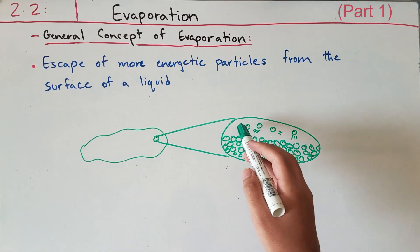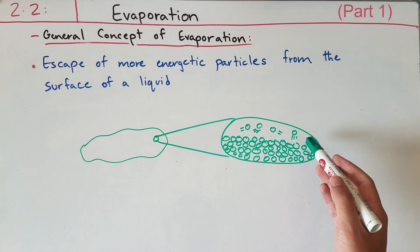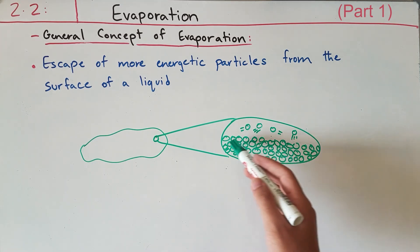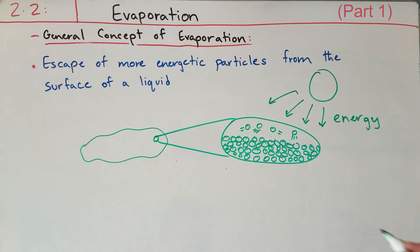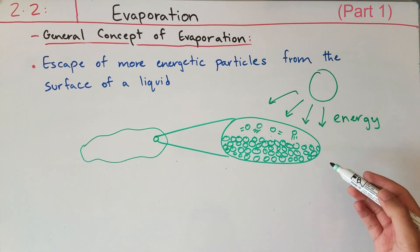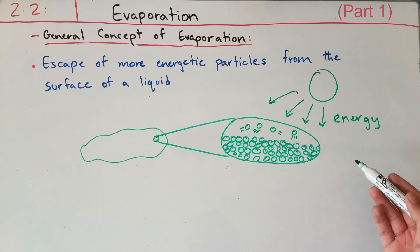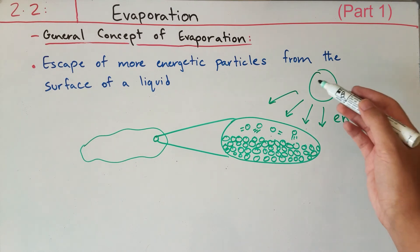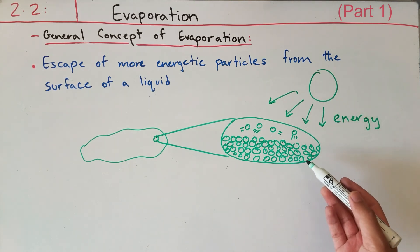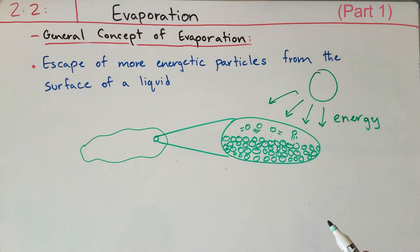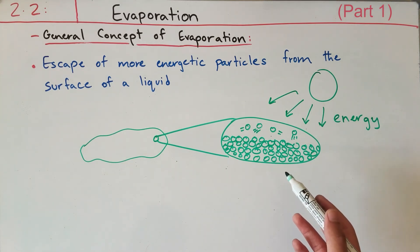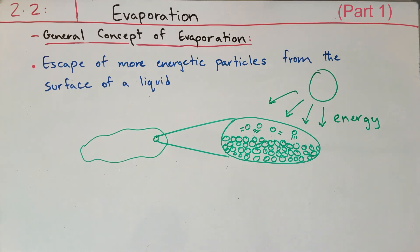The particles at the surface have more kinetic energy than all the particles stacked below. As the particles on the surface gain thermal energy or light energy from the sun, these particles will gain kinetic energy and their intermolecular forces of attraction will be less. Therefore they will be able to escape from the surface more easily than the particles that are under the surface of the liquid.